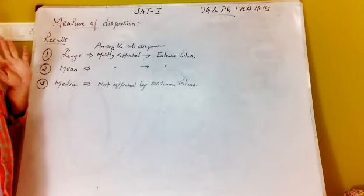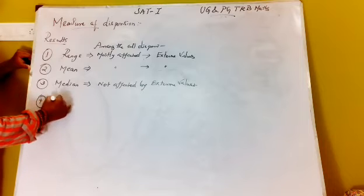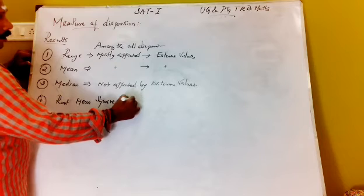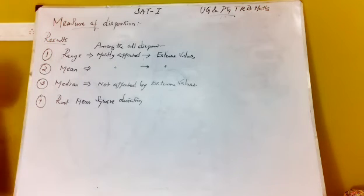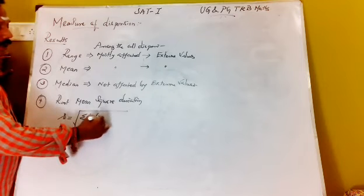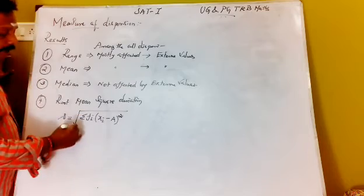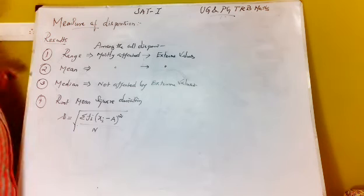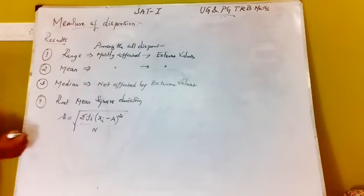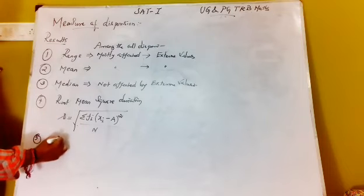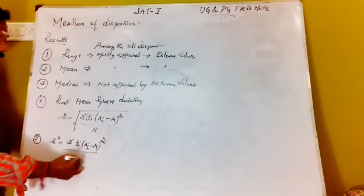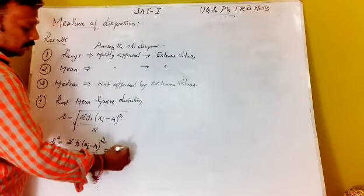The fourth one: root mean square deviation. Root mean square deviation is equal to: sigma fi into (xi minus a) whole square by capital N. Root mean square deviation equals the root of sigma fi into (xi minus a) whole square by N. So this is square, this is square — root, summation fi into (xi minus a) whole square by N. That is what is called root mean square deviation.